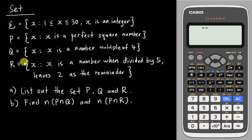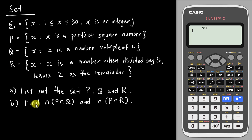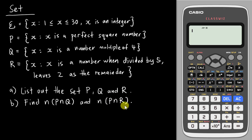The R will be a little bit complicated. For part A, they ask you to list out sets P, Q, and R. And for part B, they ask you to find the number of elements in P intersect Q, and also P intersect R.